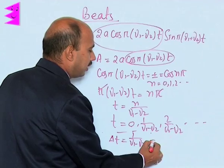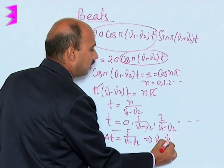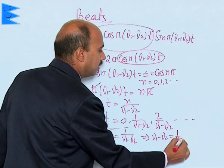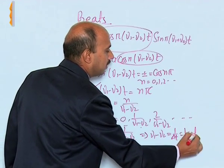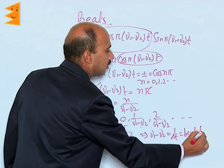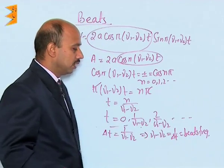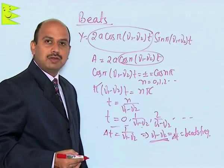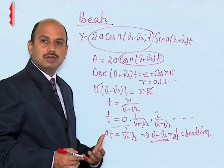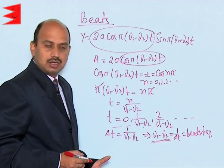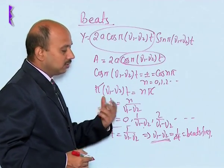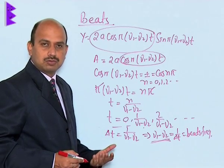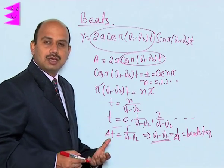So we can write ν1 − ν2 = 1/Δt, which is called the beats frequency. Here ν1 − ν2 is the beats frequency, representing the frequency of maximum intensity. At these time intervals the intensity of sound is maximum — this is the condition for maximum.